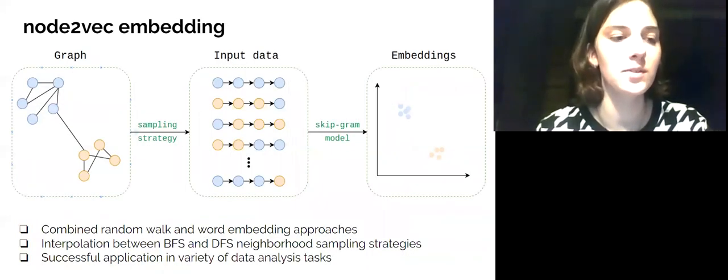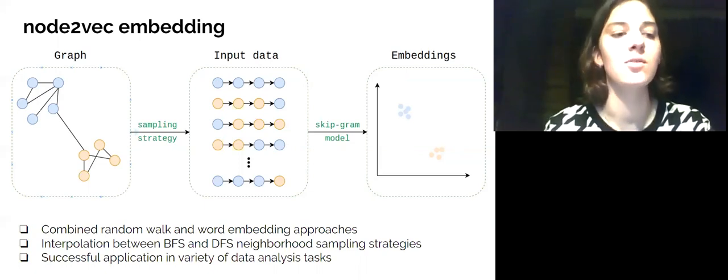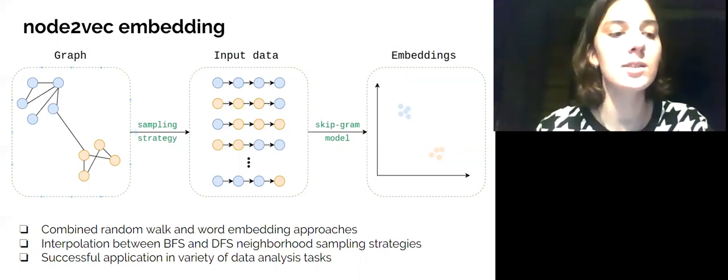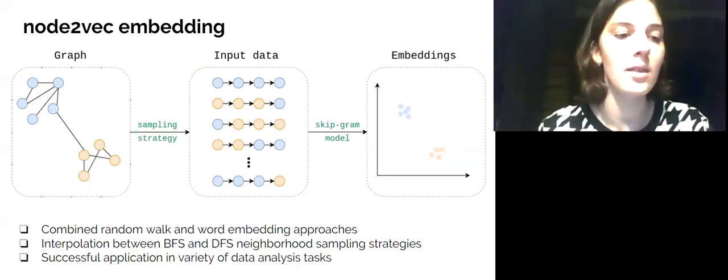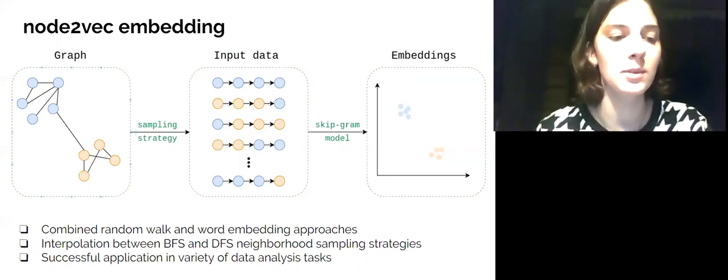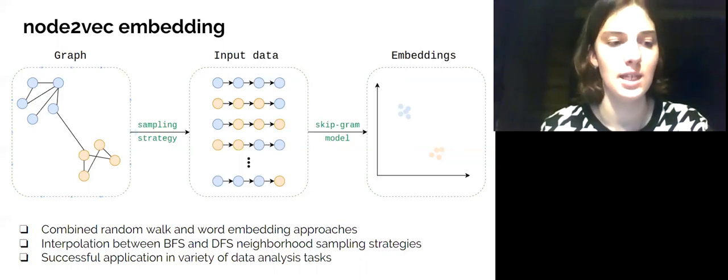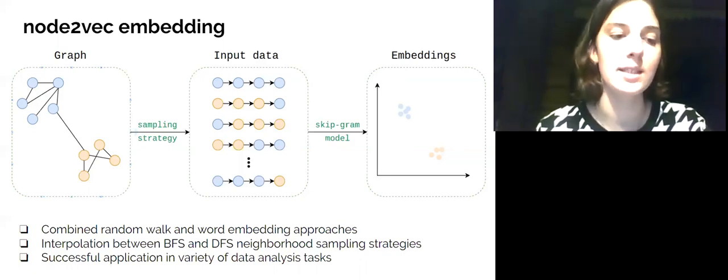We compared performances of TDA embedding with another popular approach called node2vec. This model combines methods of random walk and skip-gram technique from word-embedding fields. Using a flexible sampling strategy, node2vec samples set of neighborhoods for every node and compares them, in the way analogous to concept similarity of words in a sentence. The sampled neighborhood is the sentence here.